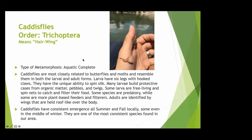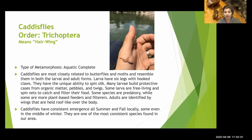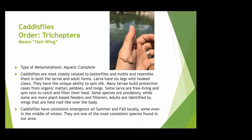Caddisflies are in order Trichoptera. Remember we went through kingdom, phylum, class, order, family, genus, species — caddisflies are in kingdom Animalia, phylum Arthropoda, class Insecta, order Trichoptera. Trichoptera actually means 'hair wing.' What makes caddisflies unique is their closest relative is butterflies and moths, so they'll have life cycles similar to butterflies and moths. Adult caddisflies kind of look like a little brown moth or small butterfly.